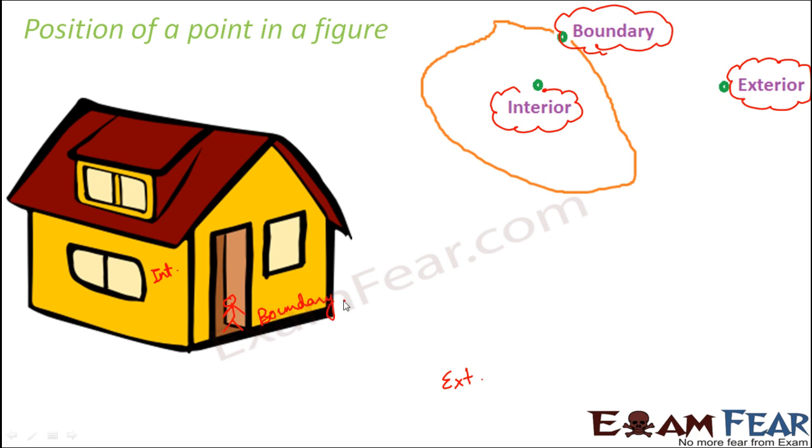So whenever you talk about a closed curve, if a point is present inside that curve, then that point is said to be in the interior. If the point is present outside, it is said to be exterior. And if the point is present on the curve, then it is on the boundary of the curve.